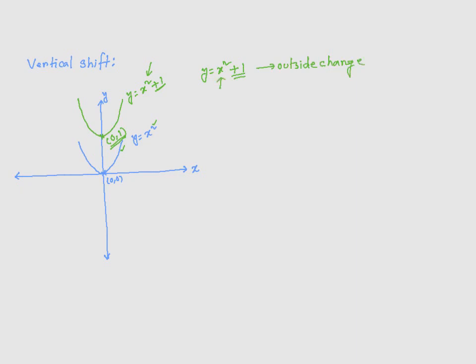So, as you would expect, for an outside change, adding a positive constant moves the function up by that unit.